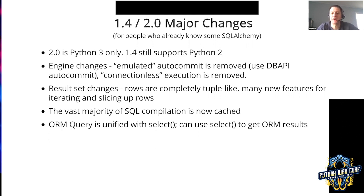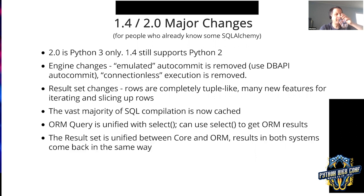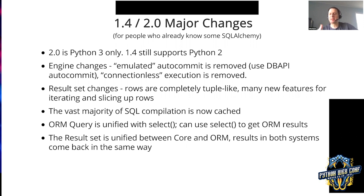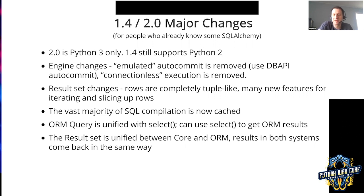The ORM query object is unified with the select object, so now you can use the select object to get ORM results — the same select object for Core and for ORM. And when you get results back in either ORM or Core, you get the same result object that has rows, so you can say result.all and get tuple-like rows. If you have SQL statements, you can run them against connection or against the session and get the same kind of thing everywhere — no surprises, very consistent. This also helps a lot with the MyPy thing because methods that return 25 different kinds of data don't work well with typing.